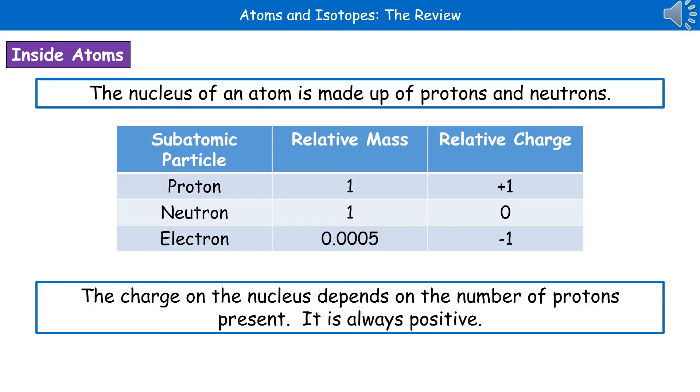So as we said, the nucleus is made up of protons and neutrons. Protons have a positive charge, neutrons no charge, hence why the nucleus is positive. The overall charge on the nucleus will depend on the number of protons that are present. Obviously however many protons there are tell you the positive charge on the nucleus.